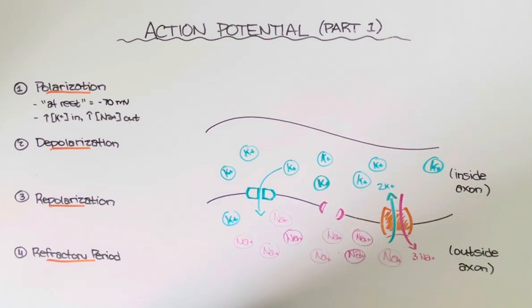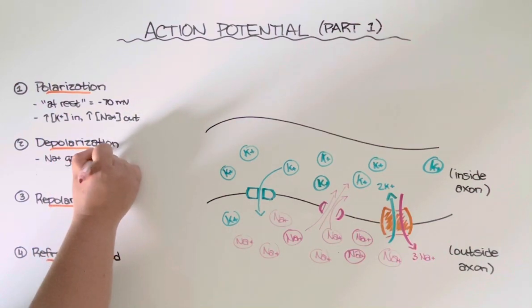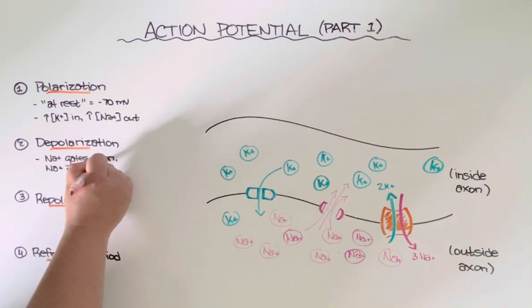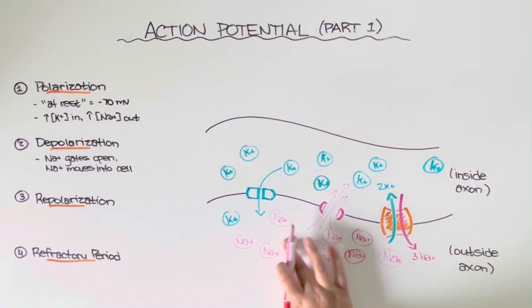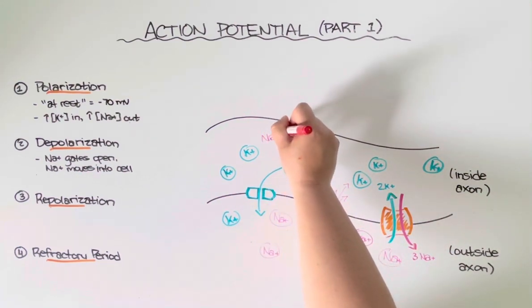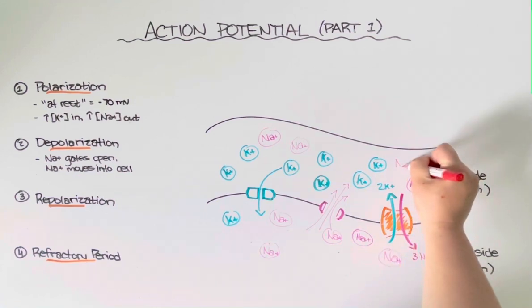So that begins the process of depolarization, and because this ion channel is now fully open, sodium is going to start to flood into the cell very rapidly. And so that is one of the main characteristics of depolarization. The sodium gates open, causing sodium to move into the cell. However, the sodium won't keep moving into the cell indefinitely. Eventually it too will reach equilibrium. So once there is an equal amount of sodium ions inside the cell and outside the cell, then eventually they're going to stop moving.